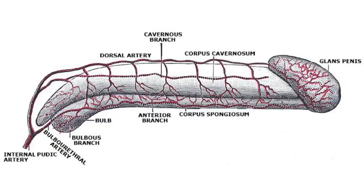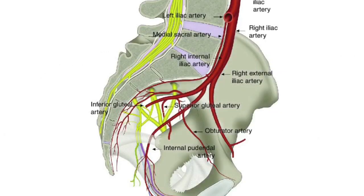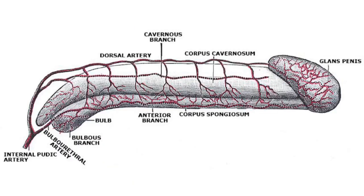The p structure requires blood which carries oxygen, nutrients, and several substances that help maintain its anatomical structure and physiological functions. The arteries that supply the p structure are mainly branches of the internal pudendal arteries. There are also the dorsal arteries of the p structure, which run on each side of the deep dorsal vein in the dorsal groove between the corpora cavernosa, supplying the fibrous tissue around the corpora cavernosa, the corpus spongiosum, the spongy urethra, and the penile skin.